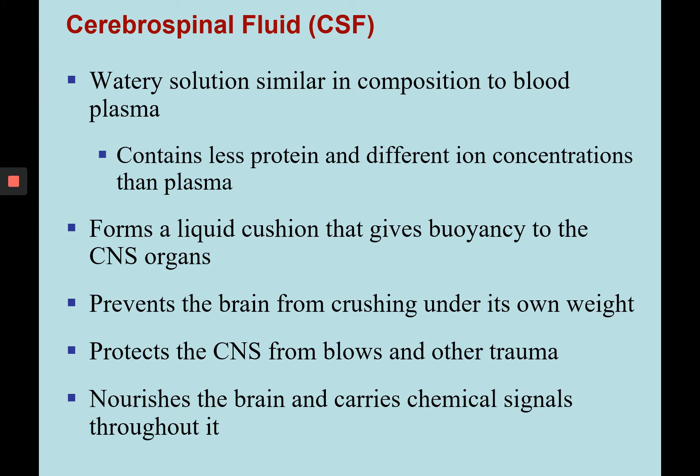Cerebrospinal fluid is a watery solution similar in composition to blood plasma, but contains less protein and has some different ion concentrations. It gives some buoyancy to the brain. We also find cerebrospinal fluid inside the ventricles, and it's able to carry nutrient or chemical signals throughout the brain to nourish it. It prevents the brain from crushing under its own weight so it floats within the skull, and it protects the central nervous system from blows and other trauma.